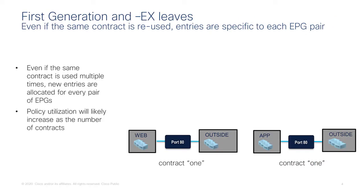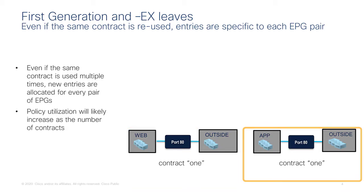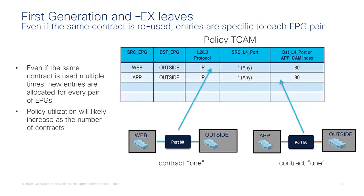Now let's talk about the second optimization. To understand it, let's first look at what happens when the same contract is reused with first generation leaves, AX leaves, or even FX leaves without compression enabled. If you have the same contract to allow port 80 from web to outside or from app to outside, each EPG pair and filter is programmed separately in the policy cam — source EPG to destination EPG to allow port 80, repeated per pair. There is no optimization recognizing that both EPG pairs use the same filters.